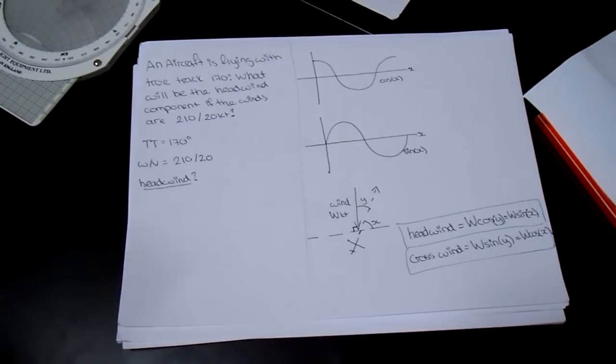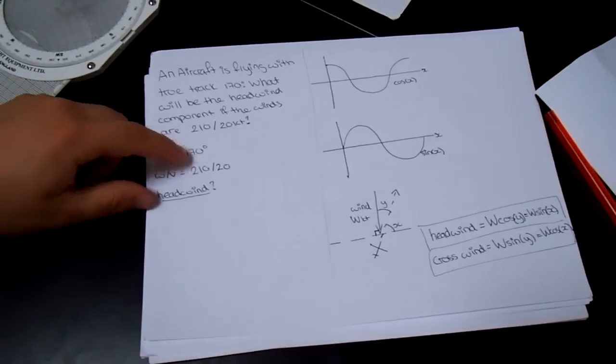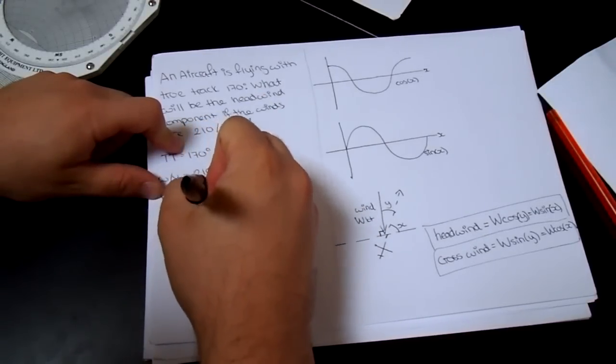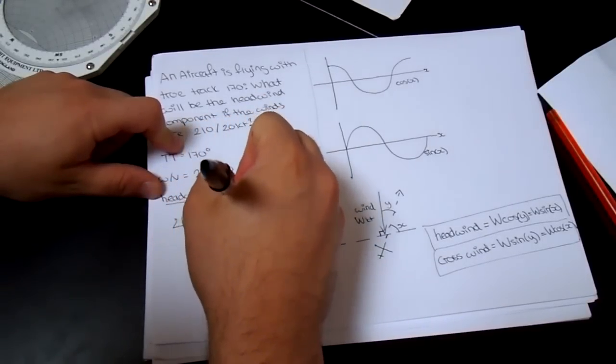So what we can do is, we have, we know the difference, we can calculate the difference between these two. So 210 minus 170 equals 40 degrees.